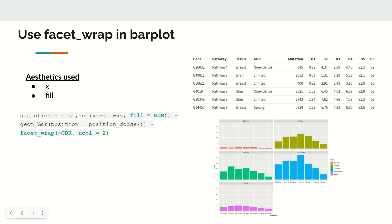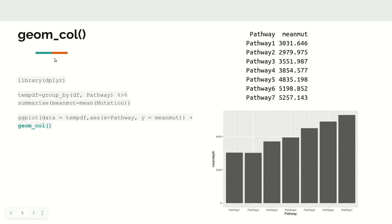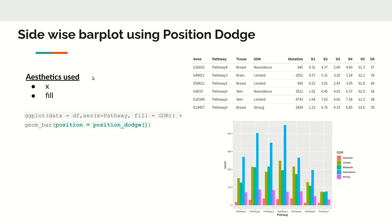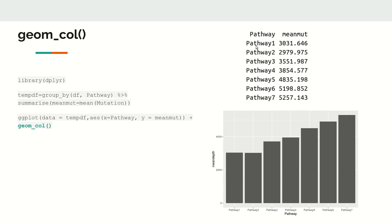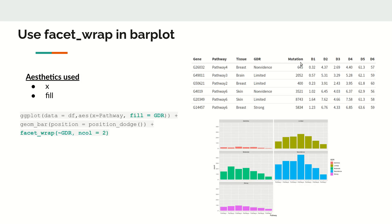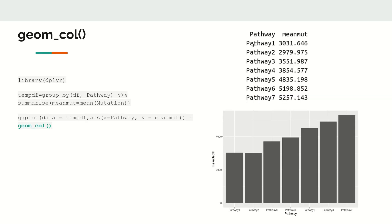So far we have used geom_bar. Now let us use geom_col. The difference is that geom_bar counts automatically on the y-axis. But sometimes you have actual computed values — for example, for every pathway you have calculated the mean number of mutations. In that case y is not a count but an actual value, and we use geom_col where both x and y aesthetics must be specified.